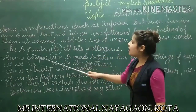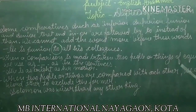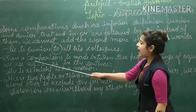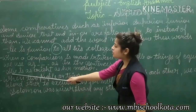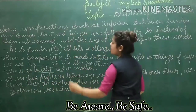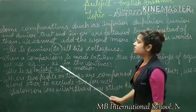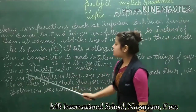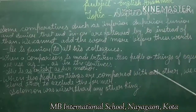Next, when a comparison is made between two people or things of equal value, we use AS...AS in the sentences. For example: she is as bright as her mother. Since we are comparing equal value, we use AS...AS here.